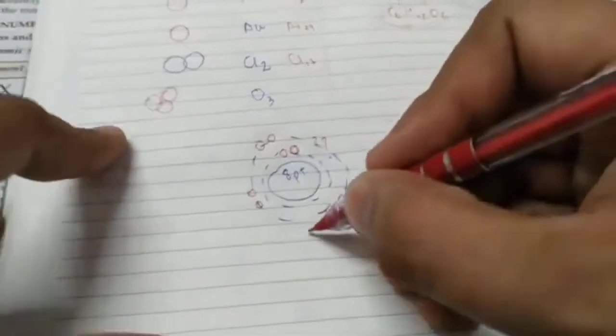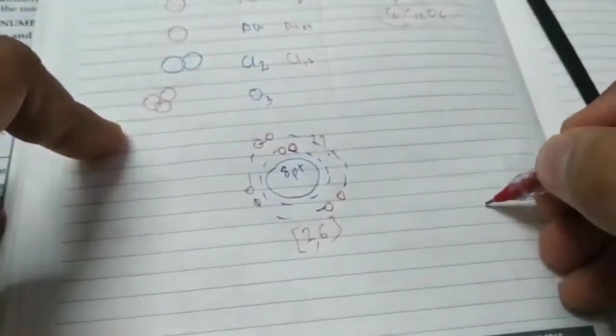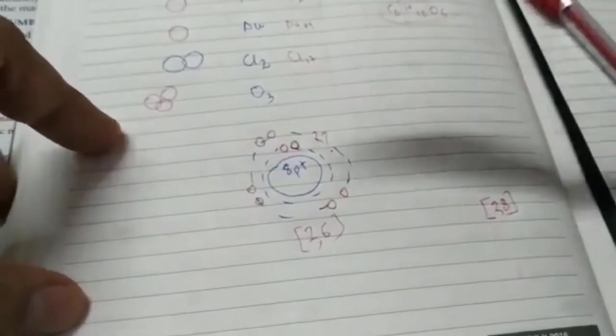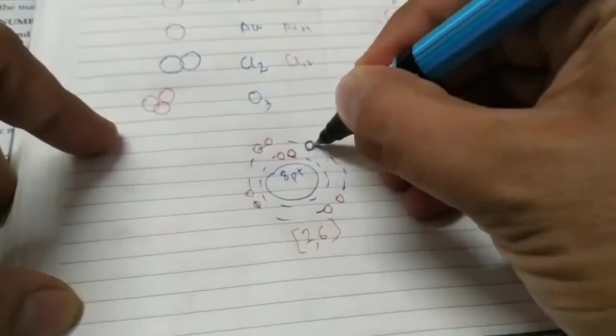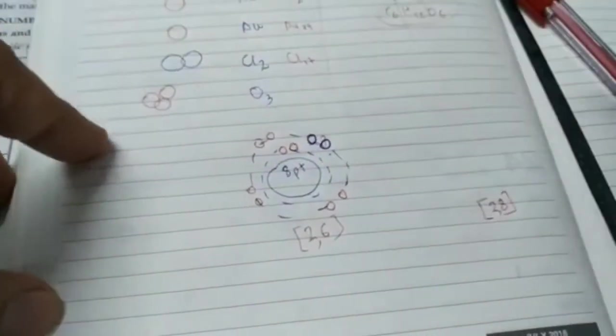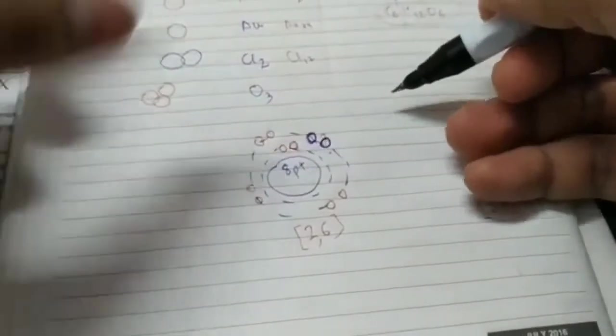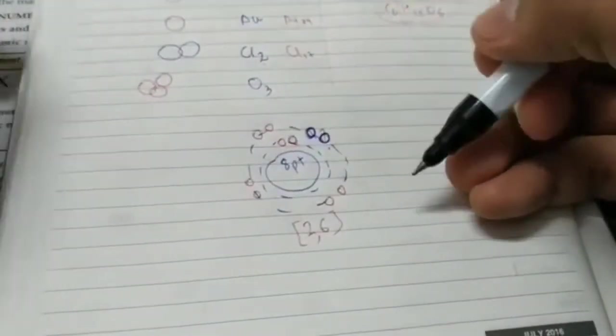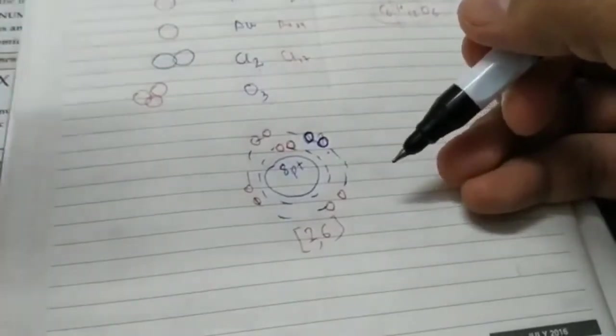So oxygen's electronic configuration is 2, 6. Whereas neon's electronic configuration is 2, 8. How can it achieve this stability? Well, it just needs 2 more electrons. And it can get those 2 electrons either by gaining it from some other atom. Or by sharing it with some other atom. That's the reason why oxygen reacts with anything. To become stable.